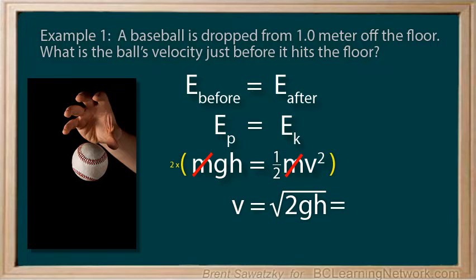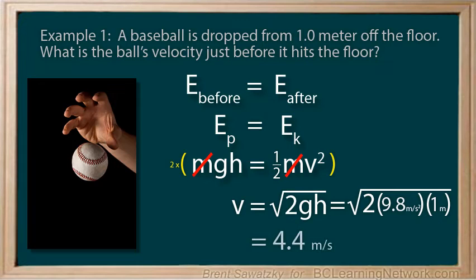Now, we can put brackets in place of our remaining variables, and plug in the numbers, and then calculate. v equals 4.4 meters per second.